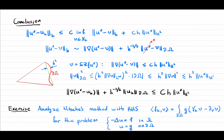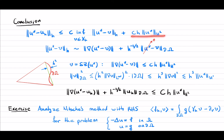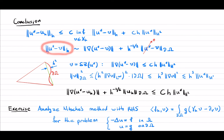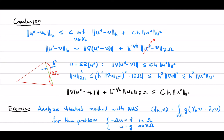Now we put everything together. Strang's second lemma says that the error of the Galerkin solution in the h-norm is bounded by the error of the best approximation in the h-norm plus the consistency term, which we know is proportional to h. It remains to see how the best approximation term behaves. The h-norm of the best approximation includes the gradient term plus h^{-1/2} times the boundary norm of the error; since u star is zero on the boundary, this is basically just the norm of our discrete approximation along the boundary.